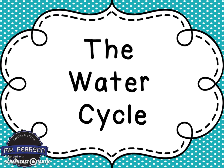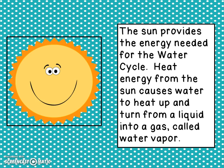The water cycle is a cycle in which water goes through several stages as it progresses through. The sun provides the energy needed for the water cycle to work. The heat energy from the sun causes water to heat up and turn from a liquid into a gas. We call this gas water vapor — when the sun shines down, it causes the liquid to heat up and turn into that gas called water vapor.